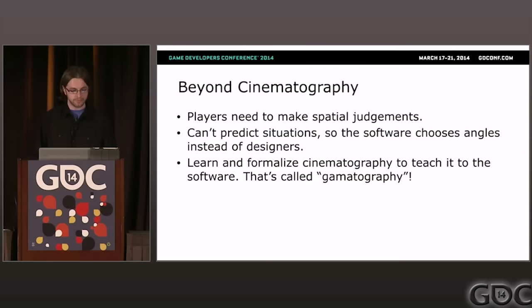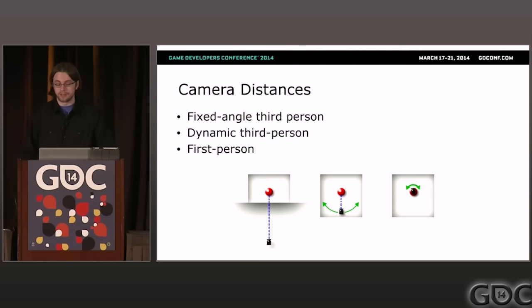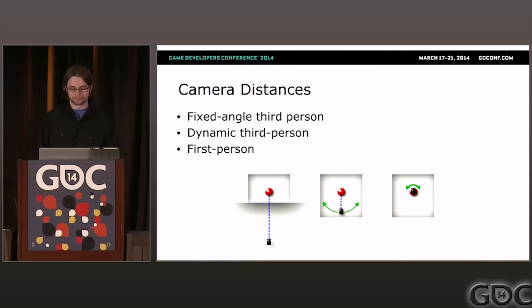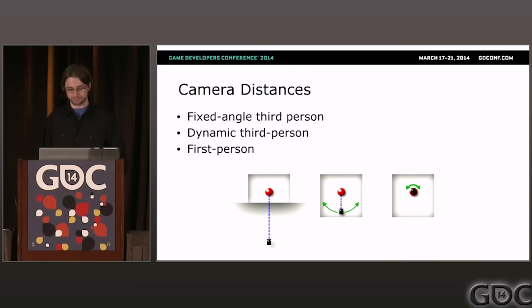I call this discipline gametography. There are basically three gametography styles in video games. On the left is fixed angle third-person, where the camera never rotates. In the middle is dynamic angle third-person, and on the right is first-person. The main difference that everything else revolves around is the distance between the camera and the avatar.